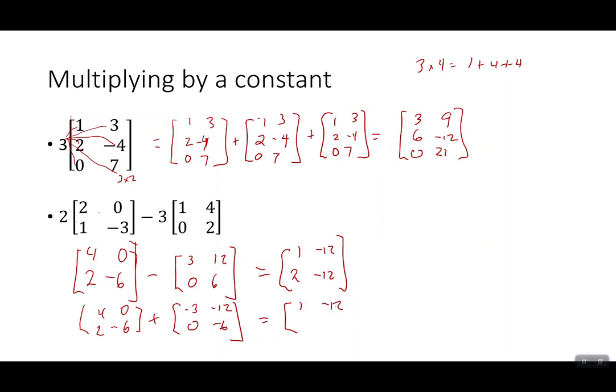So we'll still get the same answer. 2 plus 0 is 2. -6 plus -6 is -12. We get the same answer whether you distribute the negative through or change it from subtracting to adding a negative 3 instead of subtracting 3. So either way you come up with the same answer. So pretty straightforward in terms of adding and subtracting matrices. It should be fairly easy.